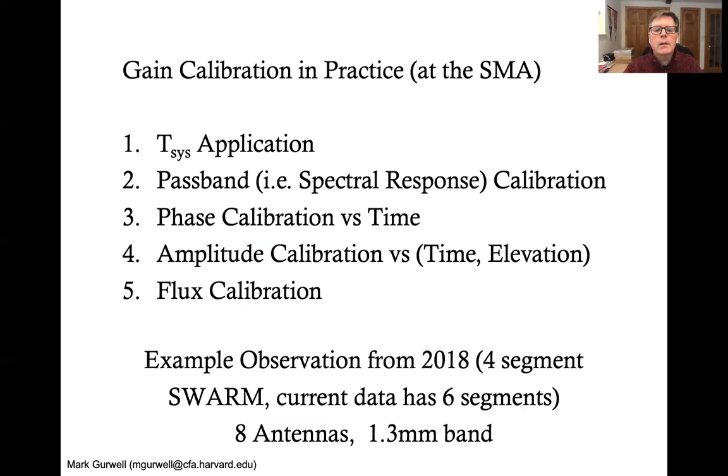So I'm going to work through an example observation from 2018. This is data that, at the time, Swarm only had four segments each 8 gigahertz. Right now, Swarm has actually been expanded to six segments for 12 gigahertz IF in each sideband for each receiver. So it's about 50% more powerful than what's shown here. But it also gets the plots to be really messy if you have six chunks instead of four. So I just decided to stick with this older data set. The calibration methods are the same between the two data sets, between the two swarm capabilities old and new.